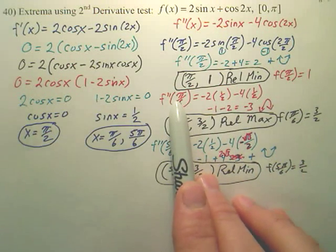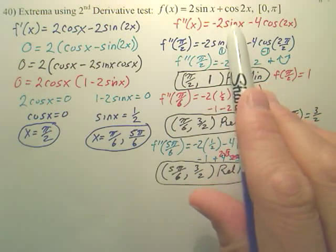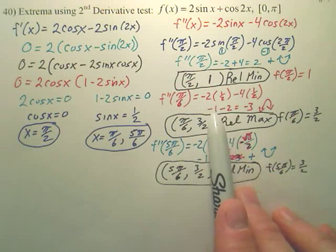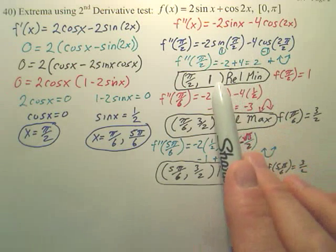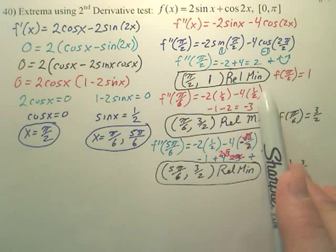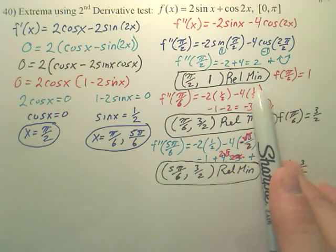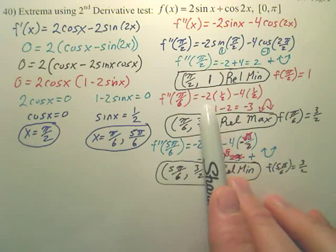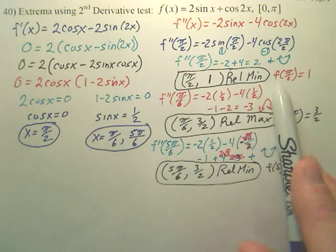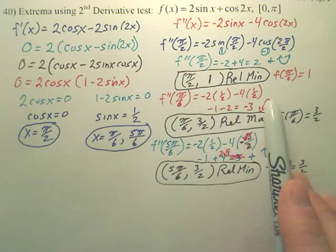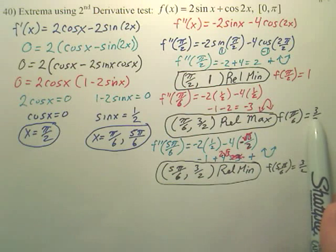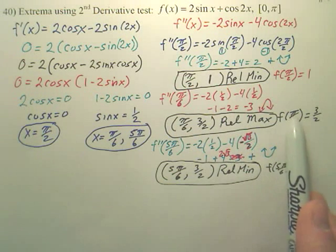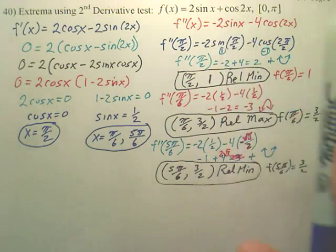Plugging pi over 6 into the second derivative: sine of pi over 6 is 1 half, and cosine of pi over 6 is also 1 half. When you plug that in, you get negative 3, which is negative — meaning concave down, so it's a relative maximum. Find the output by plugging pi over 6 into the original function.